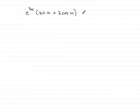Now in this part of the question we're being asked to differentiate with respect to x this expression here, e to the 3x being multiplied by sine x plus 2 cos x.